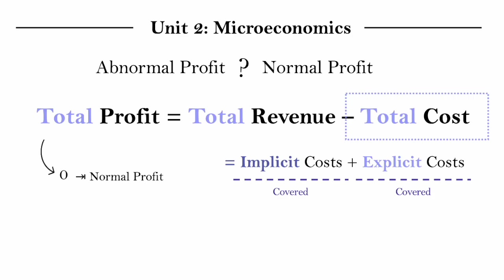Because the cost they incur from not doing whatever else they can do, losing the benefits of the alternative option they gave up, has already been covered, so they would continue producing in this situation.